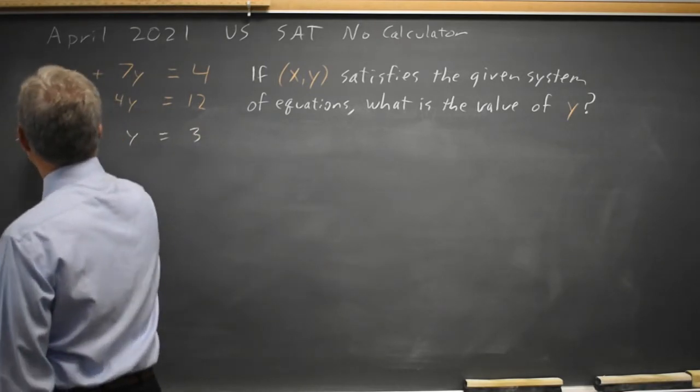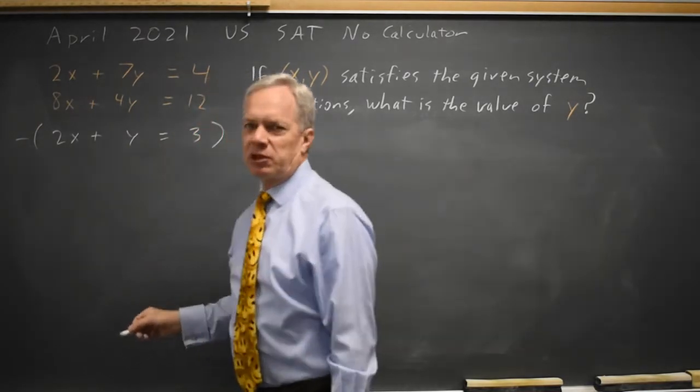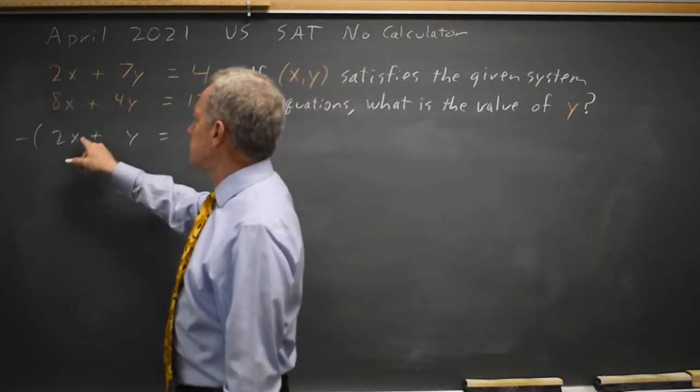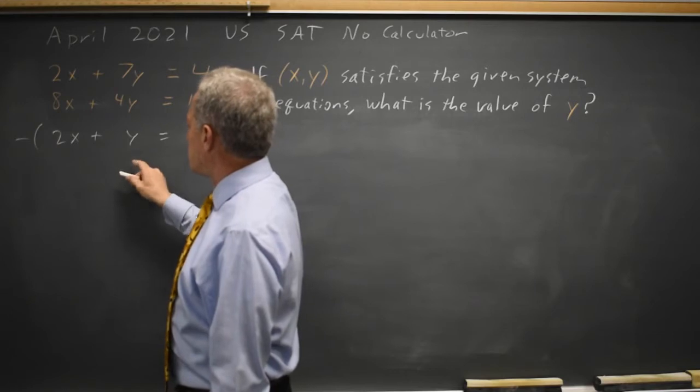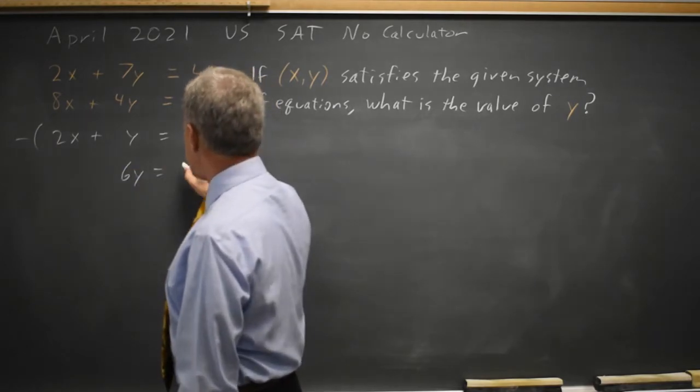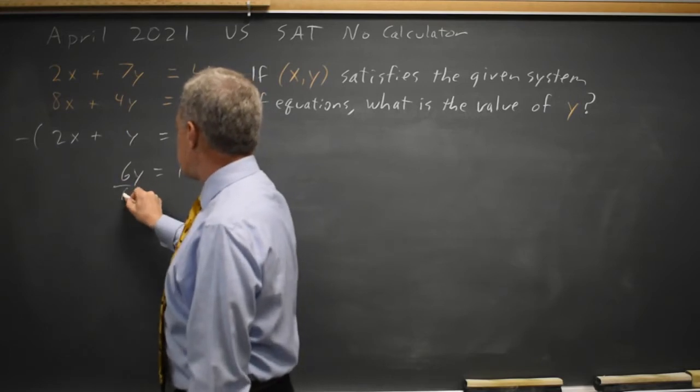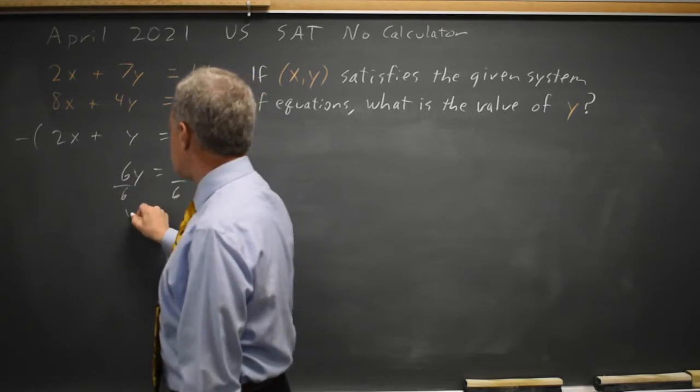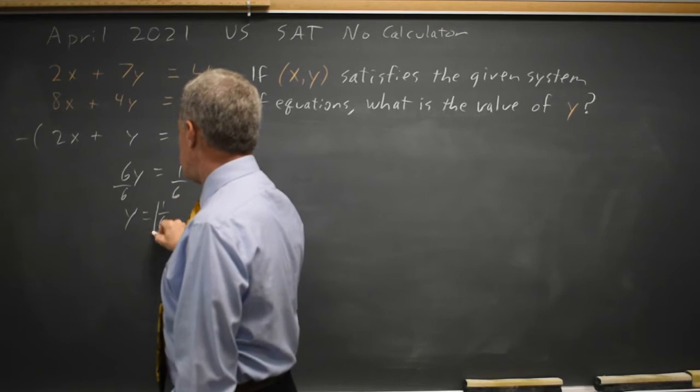If I subtract this new equation from my original first equation, 2x minus 2x is 0x, 7y minus y is 6y, and 4 minus 3 equals 1. Divide both sides by 6 and I get y equals 1/6, which is the correct answer.